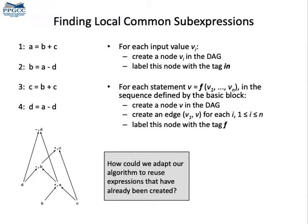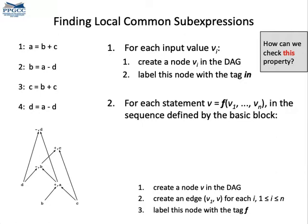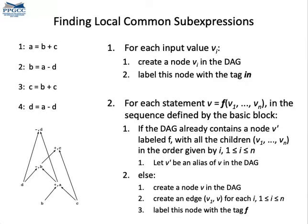Indeed, the value of D is the same as the value of B which is computed by the second instruction. We can modify the algorithm that creates the nodes to eliminate redundancies. Can you think about how to do it? Well, basically, before creating a node, we check if the DAG already contains an equivalent vertex. Two vertices are equivalent if they contain the same operation label and the same sequence of input edges.